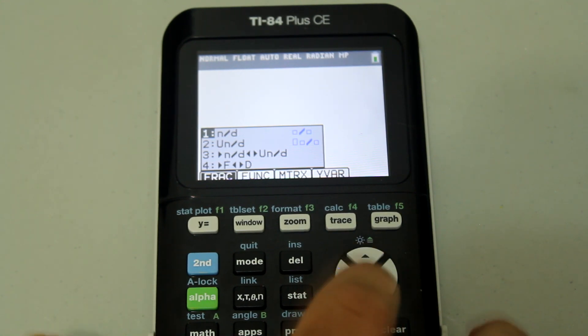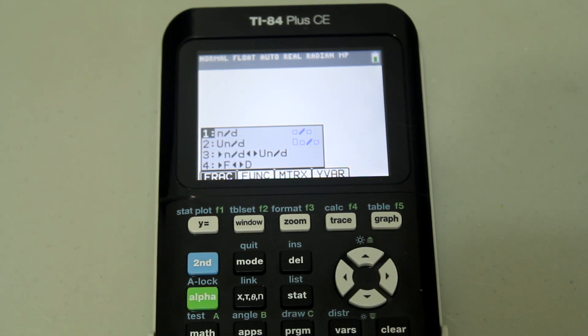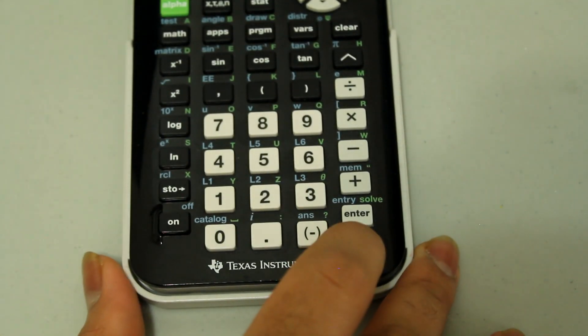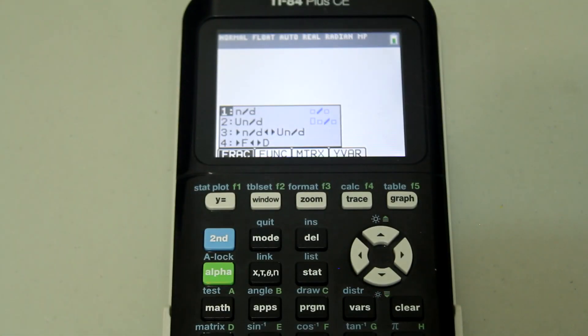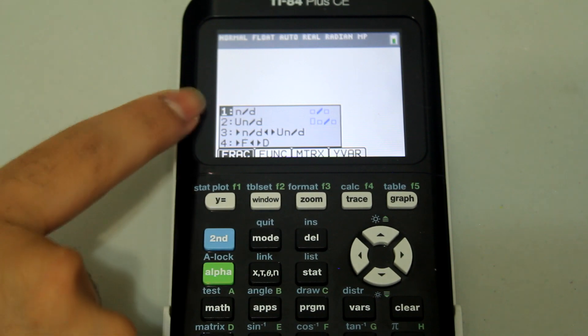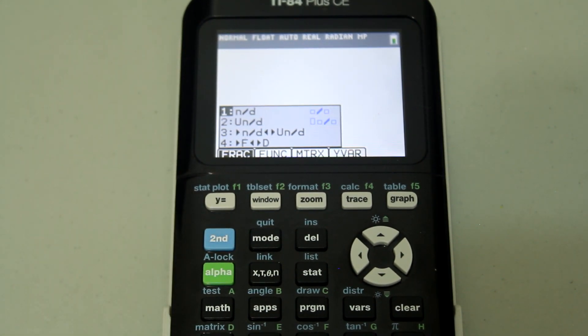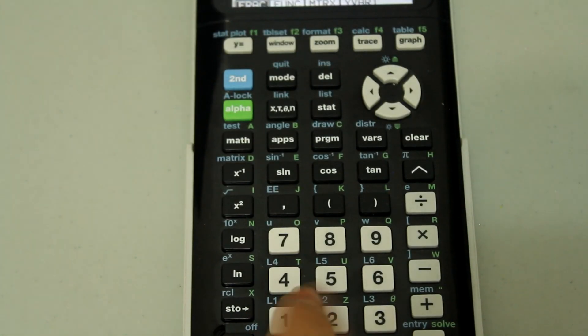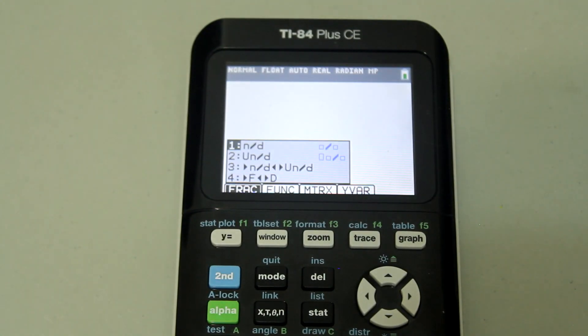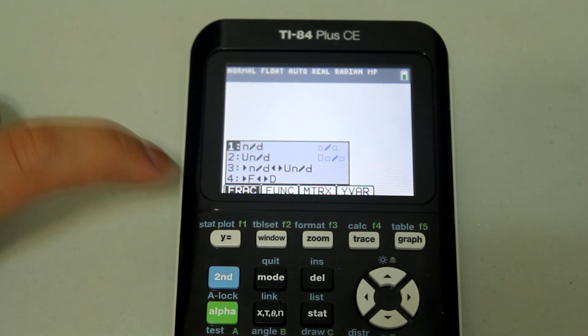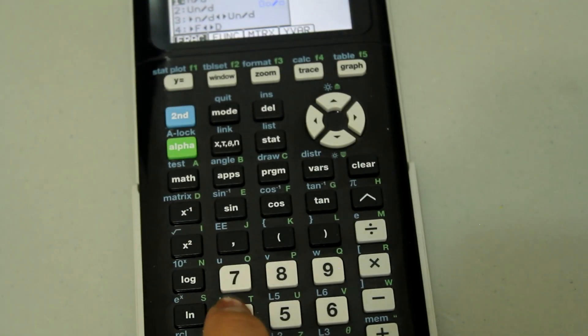You can either scroll up and down using the scroll buttons and then hit enter to select the option, or once the menu is up, you can just enter these numbers, the numbers next to the feature on the keypad and that will select the option. For example, if you wanted to convert between fractions and decimals, once the menu is up, you can just hit the number four button.